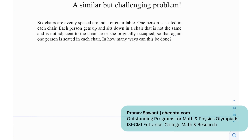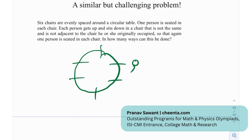We also have a similar challenge problem. Six chairs are evenly spaced around a circular table with one person seated in each chair. Each person gets up and sits in a chair that is not the same as and not adjacent to the chair they originally occupied, so that one person is still in each chair. If a person was sitting in one spot, they cannot return to that chair or either adjacent chair, leaving only three valid chairs to move to. How many ways can this be done? Use circular permutations and the multiplication principle, and let me know in the comments if you solve it!